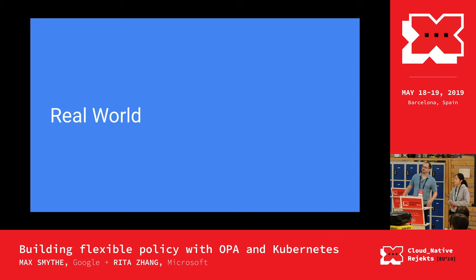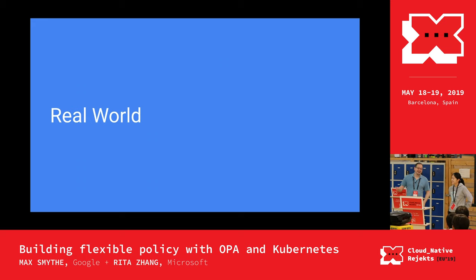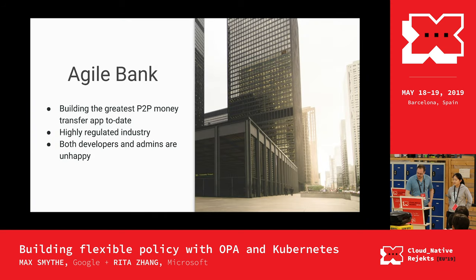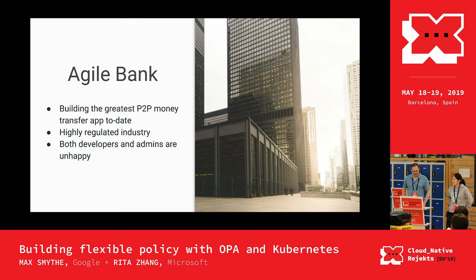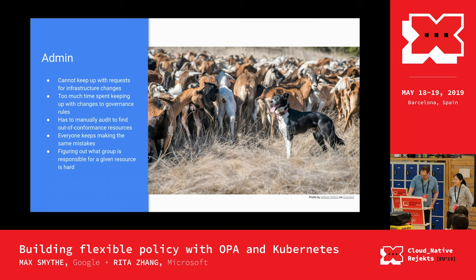To give you an example of our thought process and how we feel it might be useful to people in the real world, we thought we'd walk you through a fictitious company and see what it could do for them. Without further ado, I present to you Agile Bank, which is interested in building the greatest peer-to-peer money transfer app ever seen. They work in a highly regulated industry, and unfortunately at this bank, both the developers and the admins are not happy.